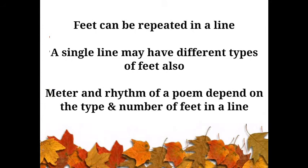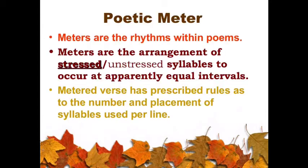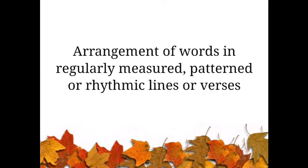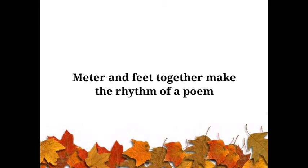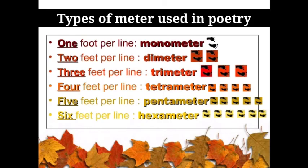These feet can be repeated in a line, so we can have different numbers of feet in a line of a poem. The meter and rhythm of the poem depend on the type and number of feet in a line. Meter can be roughly defined as the number of feet in a line. The dictionary defines meter as the arrangement of words in regularly measured, patterned, or rhythmic lines or verses. Meter and feet together form the rhythm of a poem.